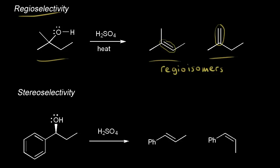This is a regioselective reaction — one regioisomer is favored over the other. In this case, the tri-substituted alkene on the left is the major product, whereas the di-substituted alkene on the right is the minor product. That's regioselectivity.